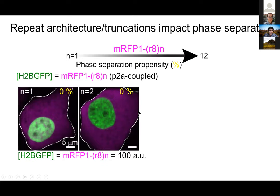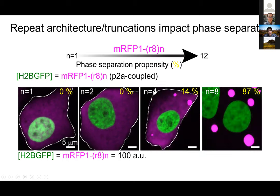Here's what it looks like in the cell. For n=1, when expressed in keratinocytes — the cells of the skin — the magenta signal is diffuse in the cytoplasm; there is no phase separation. For n=2 at the same concentration level, we also don't see signs of phase separation. But as soon as you get to four repeats of the R8 domain, you start seeing some signs of phase separation in some cells. And at eight repeats, you basically always see signs of phase separation at this concentration.